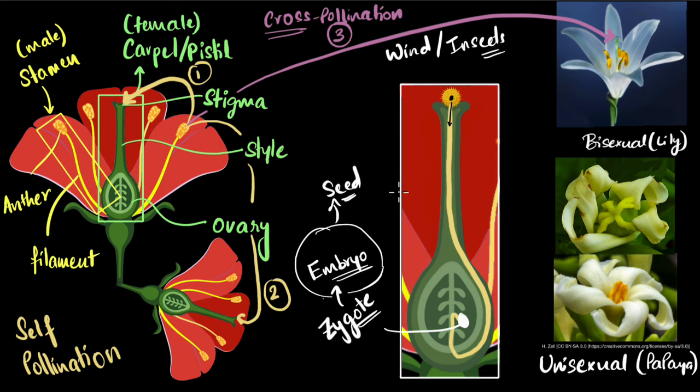And then the animals eat the fruit and then the seed finds its way on the ground. And when the conditions are right, the seed can start germinating. And eventually this plant can grow and form its own flowers. And the cycle repeats. Amazing, isn't it?